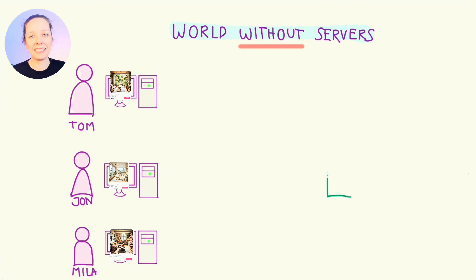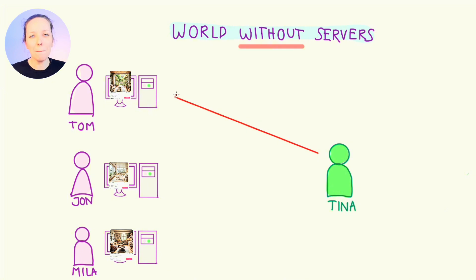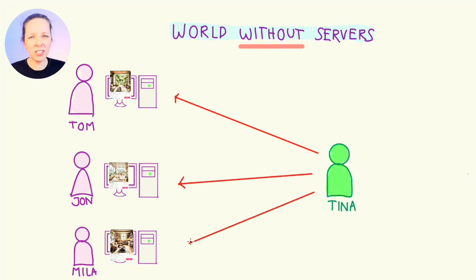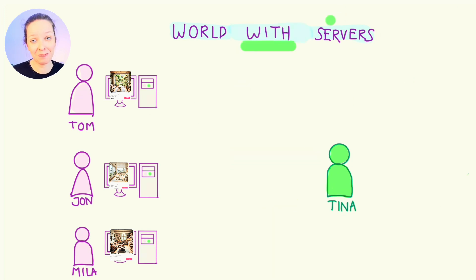Now meet Tina. She is planning a trip to Zurich and wants to rent an apartment for a few days. But here's the problem — Tina doesn't know Mila, John or Tom. And even if she did, how would she magically access their computers to get the information of the flats? And this is where the server comes in.